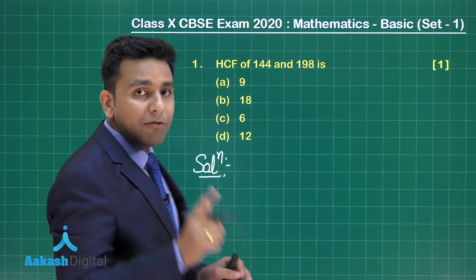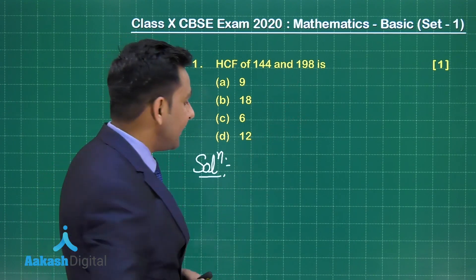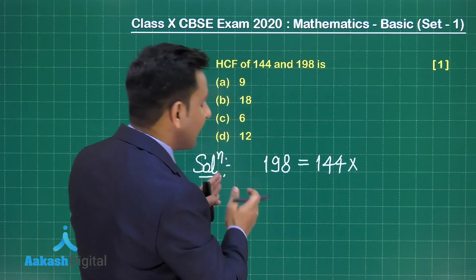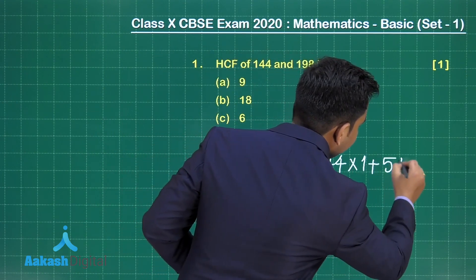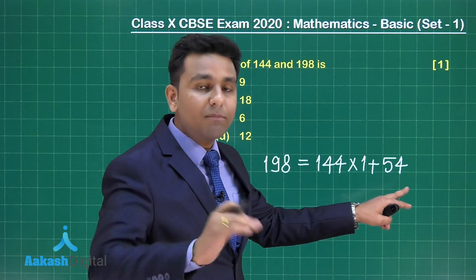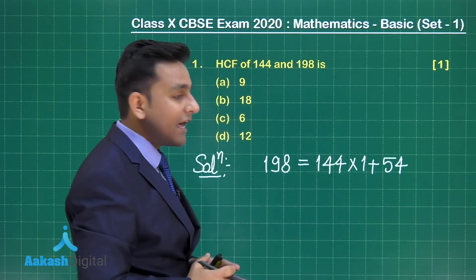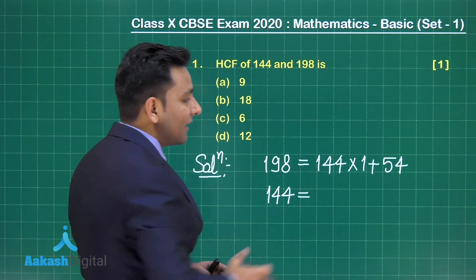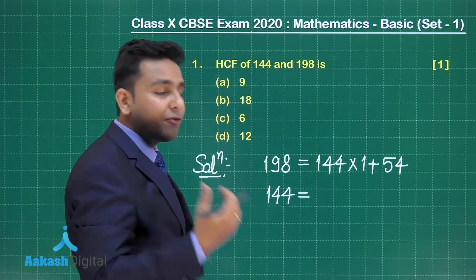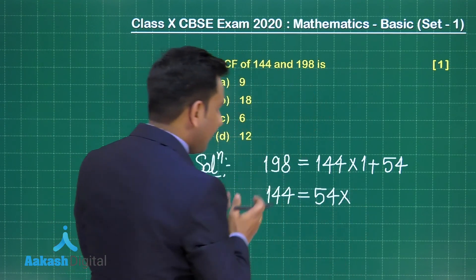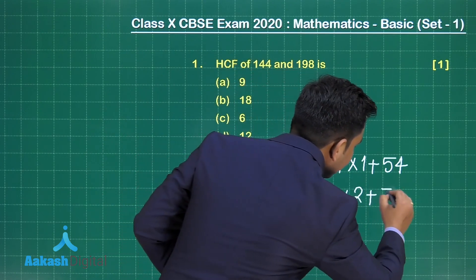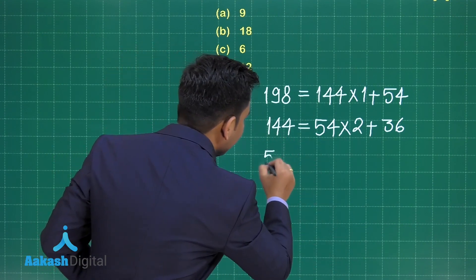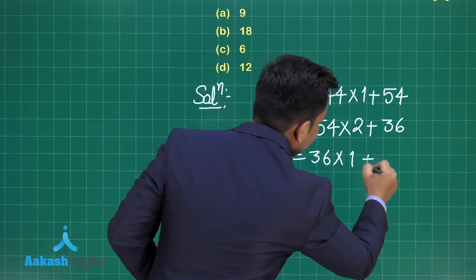Using Euclid's division algorithm, first we choose the greatest number that is 198. So we are assuming 198 as dividend and 144 as divisor. When we divide 198 by 144, we get quotient 1 and remainder 54. So here remainder is not 0, that means we proceed for the next step. Then we write 144, which is considered as dividend for the next step, and the remainder 54 from the previous step is the divisor. When 144 is divided by 54, we get quotient 2 and remainder 36. Again, remainder is not 0, so we proceed to the third step. Then we write 54 equals 36 multiplied by 1 plus 18.